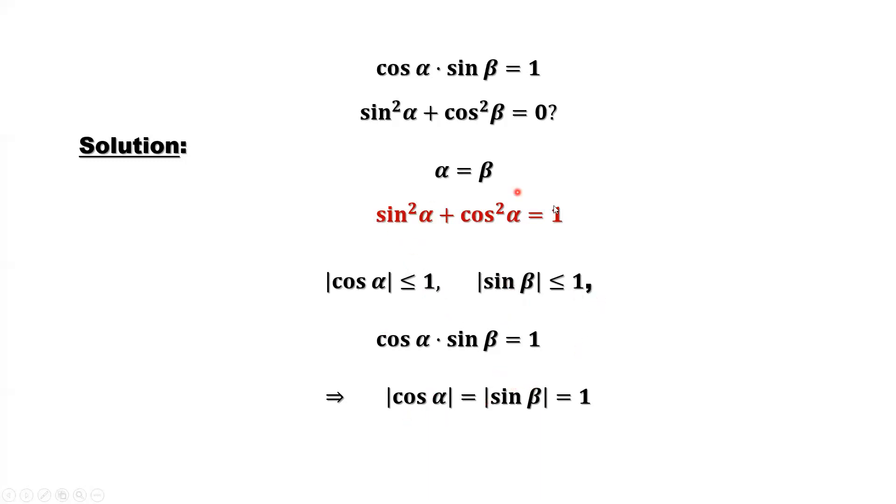we use this formula. We can see here if we know cosine alpha absolute value equals one, so the square, cosine squared alpha, is also equal to one. One minus one here cancels. You can see sine squared alpha equals zero.